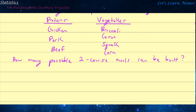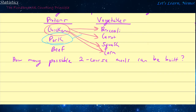We can do this manually. If we choose chicken as our protein, we can pair it with broccoli, carrot, squash, or corn — four different possible two-course meals. We could choose pork and then choose broccoli, carrot, squash, and corn — four other combinations. Or we could choose beef and have broccoli, carrot, squash, or corn — another four, totaling twelve.